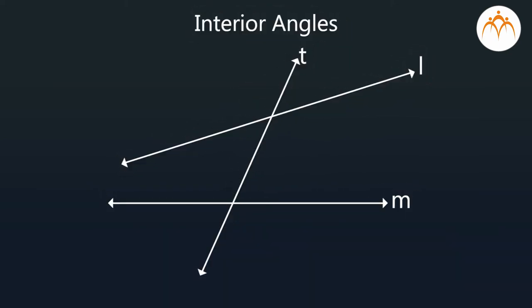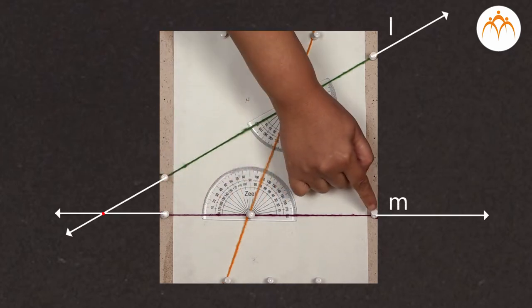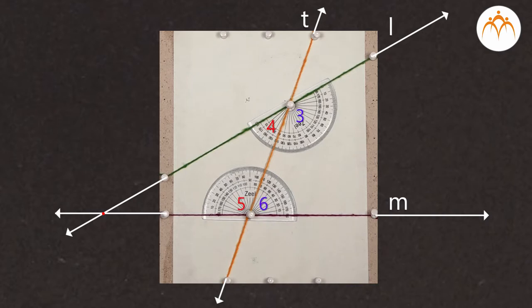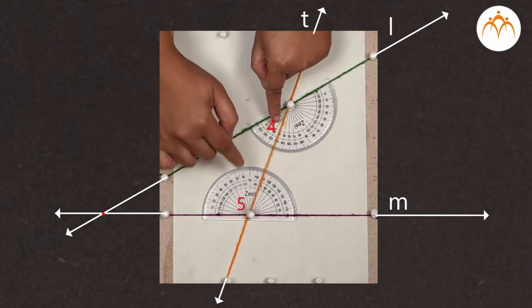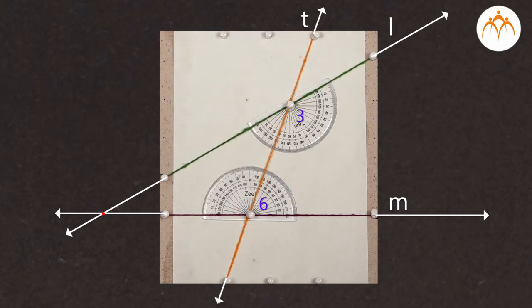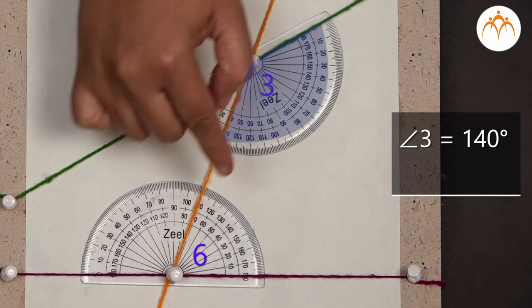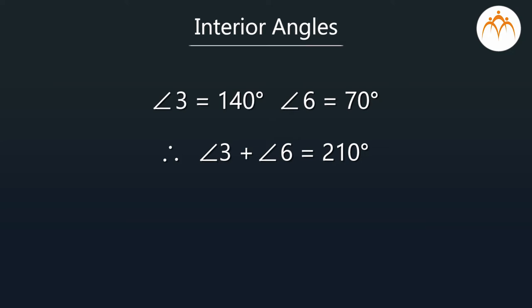Now let us see the relationship between the angles in each pair of interior angles when they are formed by two intersecting lines and a transversal. Line L and line M are two intersecting lines cut by transversal T. We get two pairs of interior angles: angle 3 and angle 6 form the first pair, and angle 4 and angle 5 form the second pair. Angle 3 measures 140 degrees, whereas angle 6 measures 70 degrees. If we add their measures, the sum is equal to 210 degrees.